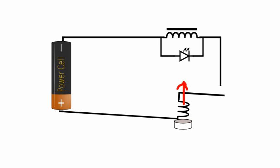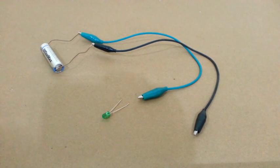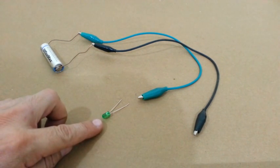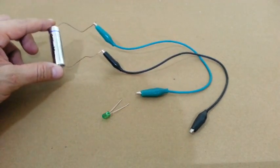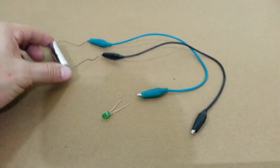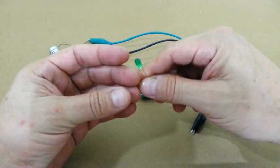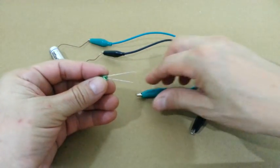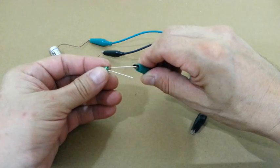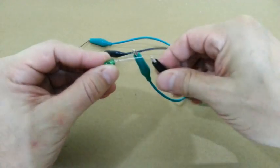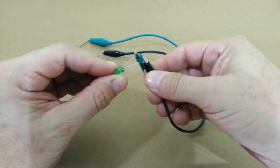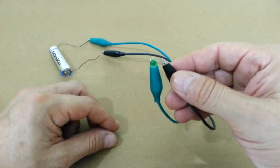Here we have an LED and a AA battery, 1.5 volts. The LED needs at least 1.9 volts to work. So if we connect positive and negative, the LED will not glow. The voltage is not enough for the LED.